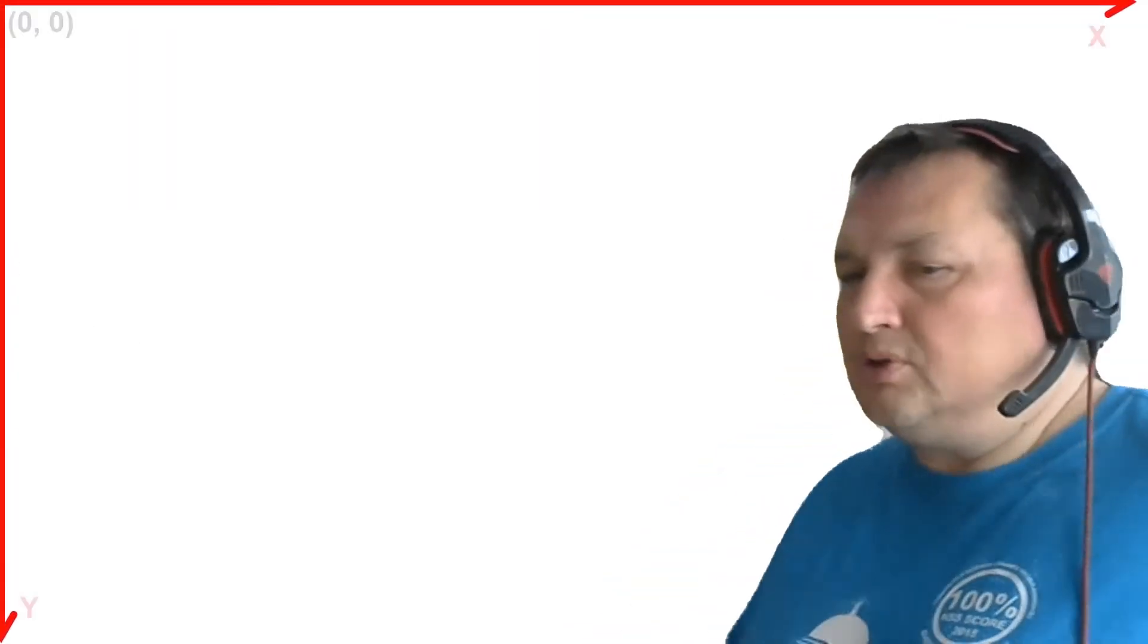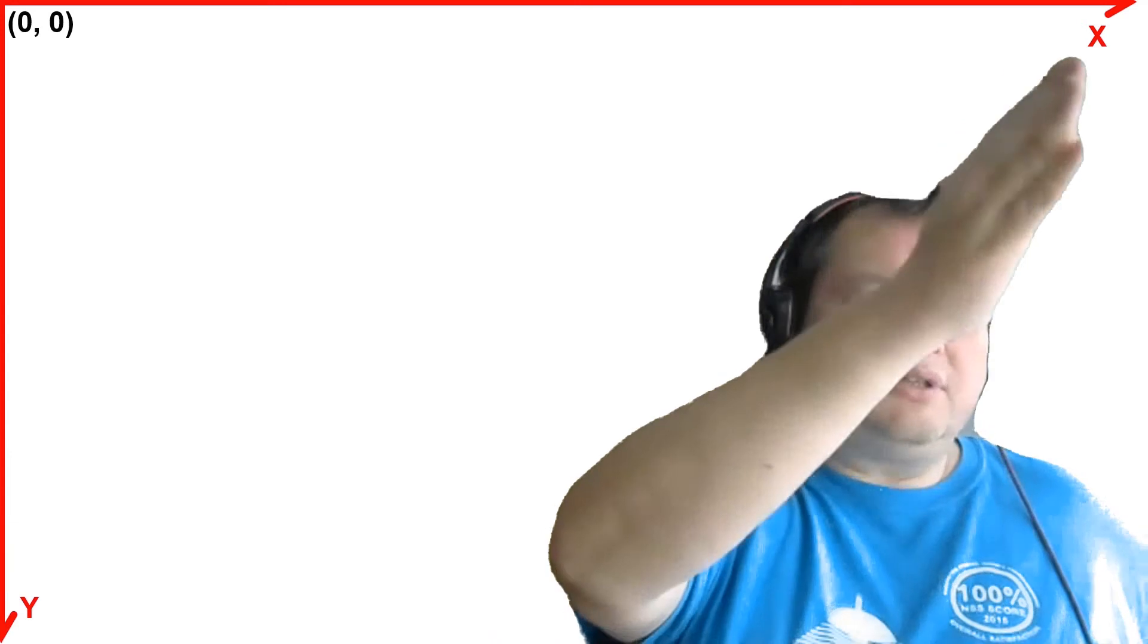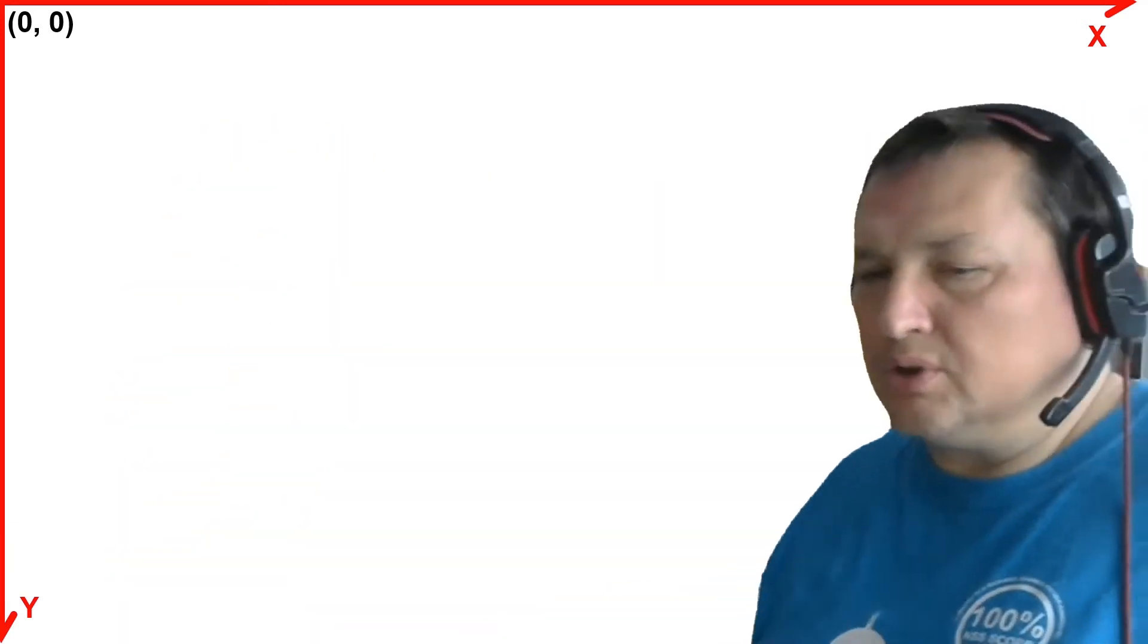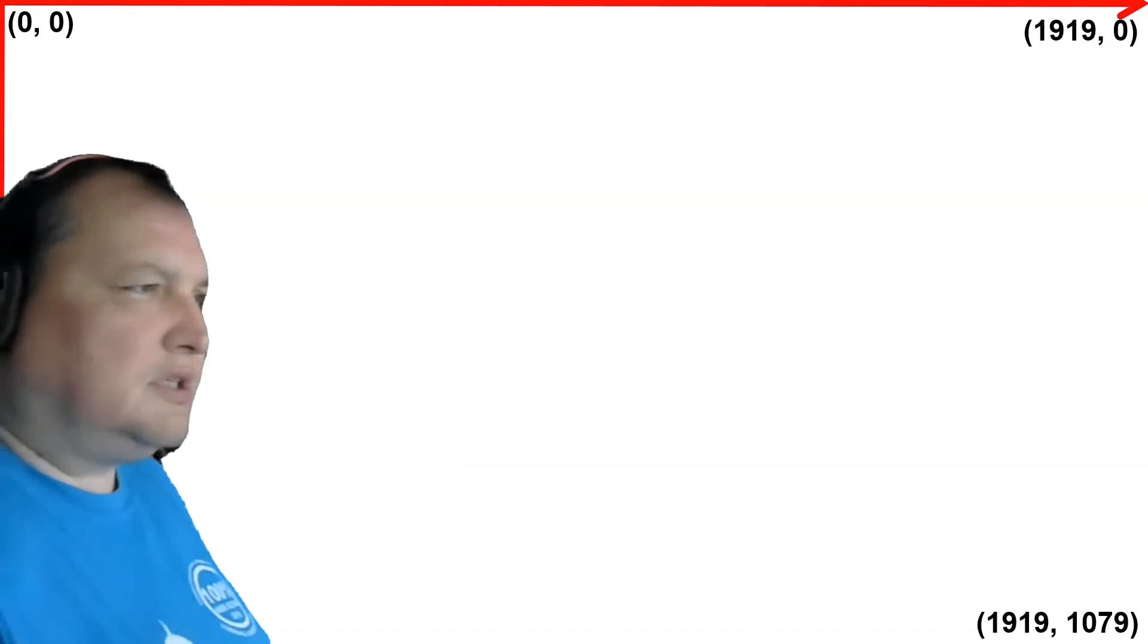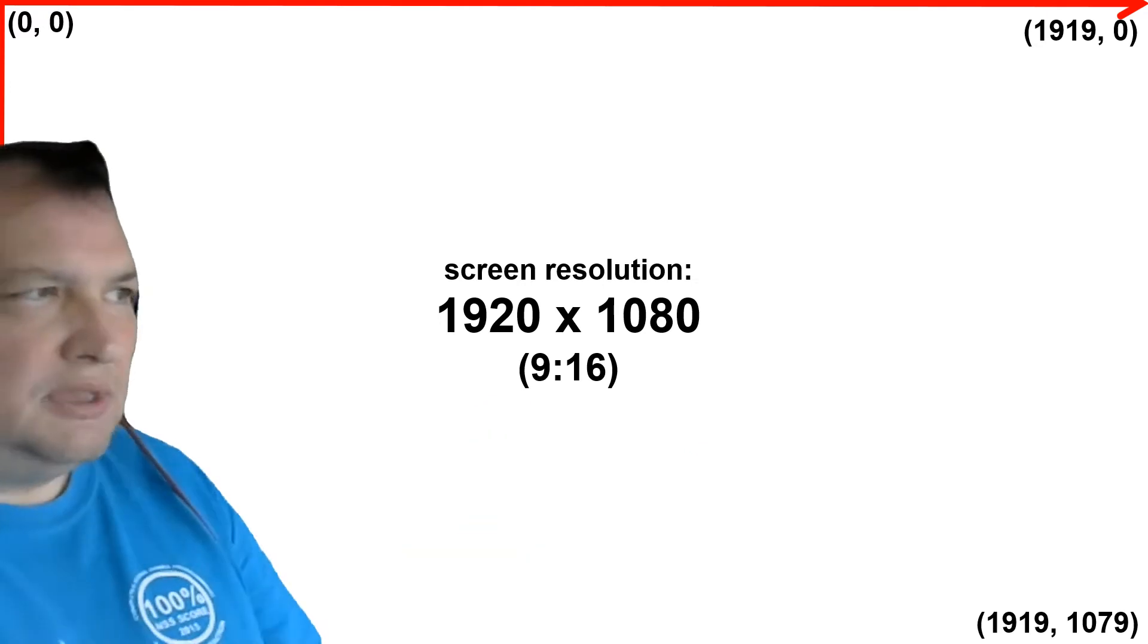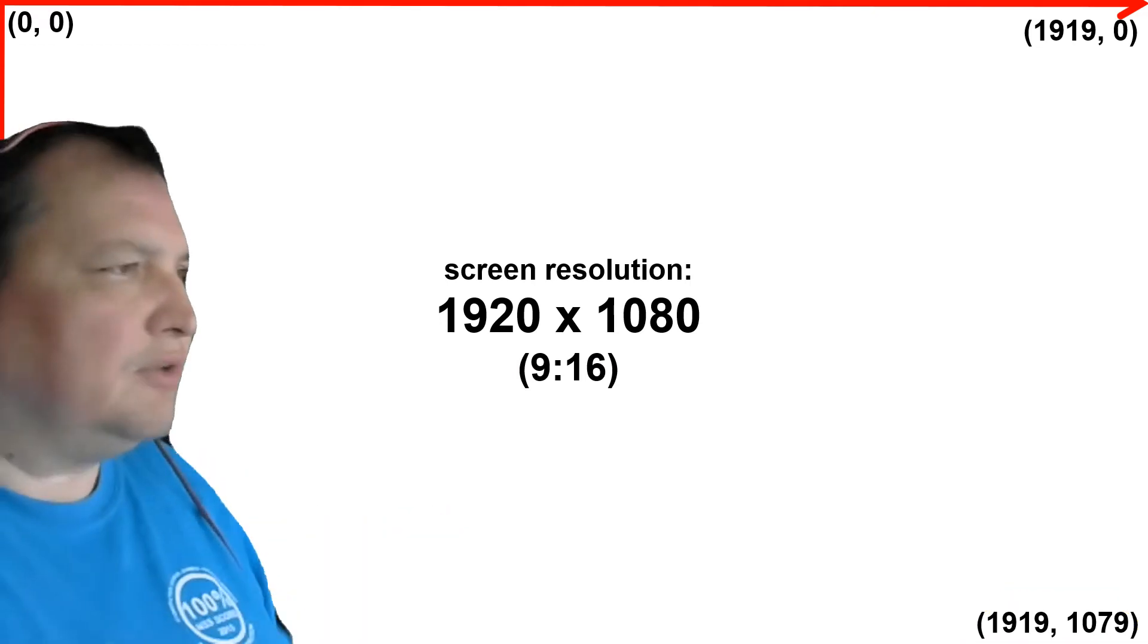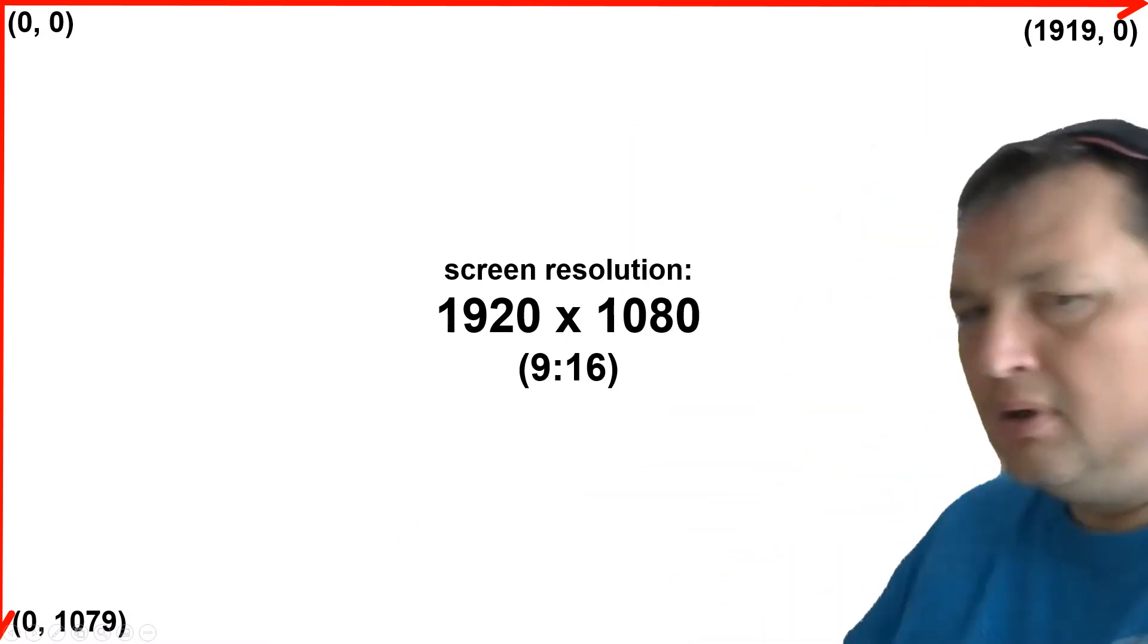So the 0,0 point will be here in top left corner, the x-axis running this way, and the y-axis running here from the top to the bottom. The pixel with the maximum values of coordinates is here, and this is 1919 by 1079. This is because the resolution of this particular screen is 1920 by 1080. Please note that these values here are lower by 1 than the actual resolution, and this is because we count pixels from 0,0.